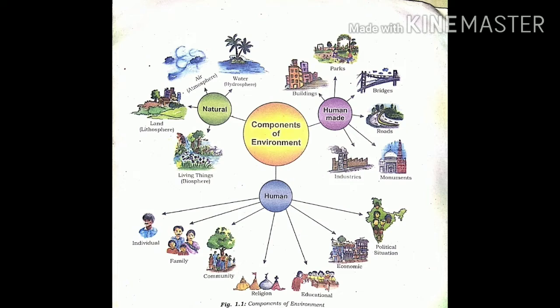The second component is human-made — what humans have built and made. Examples include buildings, parks, bridges, roads, industries, and monuments. The third component is human — we, the individual, family, community, religion, educational, economic, and political situations which happen in our environment. These three components — nature, human creation, and human beings — together form the environment.